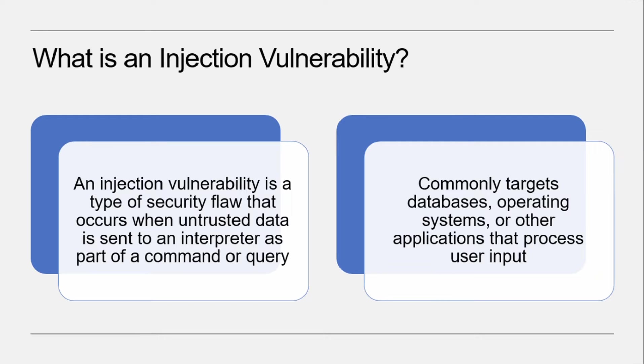Injection vulnerability is a type of security flaw that occurs when untrusted data is sent to an interpreter as part of a command or query. It commonly targets databases, operating systems, or other applications that process user input. An injection attack occurs when an attacker exploits code that hasn't been sanitized successfully — the code may not have been validated or filtered, making it insecure and allowing attackers an open opportunity to inject their own malicious code into an application in order to execute remote commands.